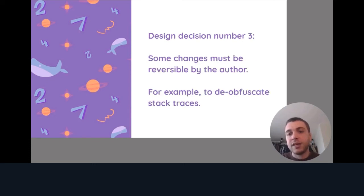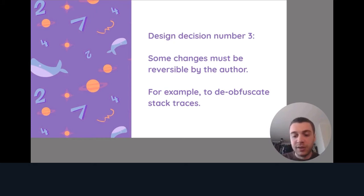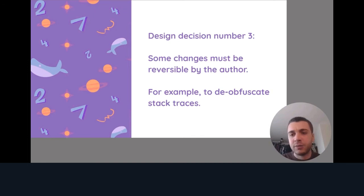The last design decision is that some of the changes applied to obfuscate source code should be reversible by the author — that is, if you have the original source code. This can be useful: if you obfuscate a binary and publish it, and somebody sends you a panic stack trace, all the names and information will be shuffled. But if you have the original source code, you should be able to de-obfuscate that information to obtain the original one, to debug what happened without having to manually guess like anybody else would.